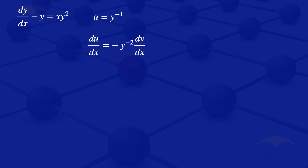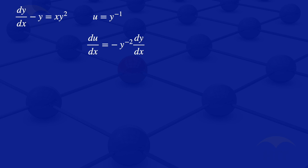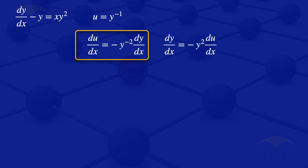So that's the differential equation we have. We can make the derivative of y with respect to x the subject of the formula by dividing the whole equation by minus y to the power minus 2. We get dy/dx equals minus y squared multiplied by du/dx.